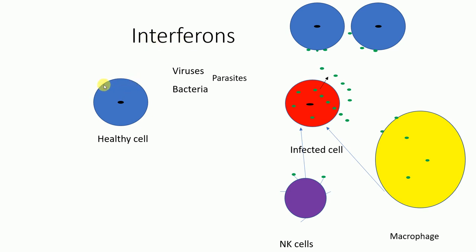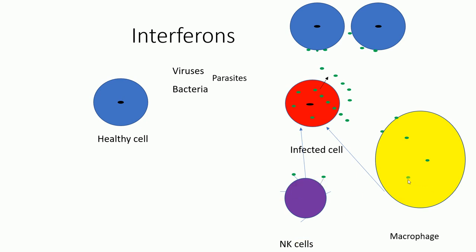Let's take an example. This blue colored cell is a healthy cell, and when this blue colored healthy cell is infected by viruses, this cell is now the infected cell, shown in red. The infected cell will produce green colored molecules known as interferons, which are released to the surrounding environment. This surrounding environment has healthy cells shown in blue, and also other leukocytes such as macrophages and natural killer cells, both of which have important roles in the innate non-specific immune system.